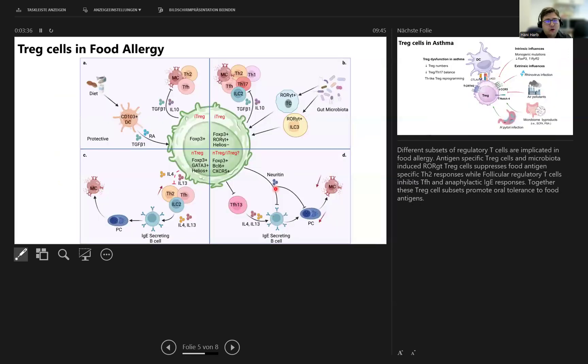As for the role of T-reg cells in allergic diseases, we would start discussing T-reg cells and food allergies. There have been multiple subsets of regulatory T-cells implicated in food allergy. Antigen-specific T-reg cells and microbiota-induced ROR-gamma-T T-reg cells suppress food allergen or food antigen-specific TH2 responses.